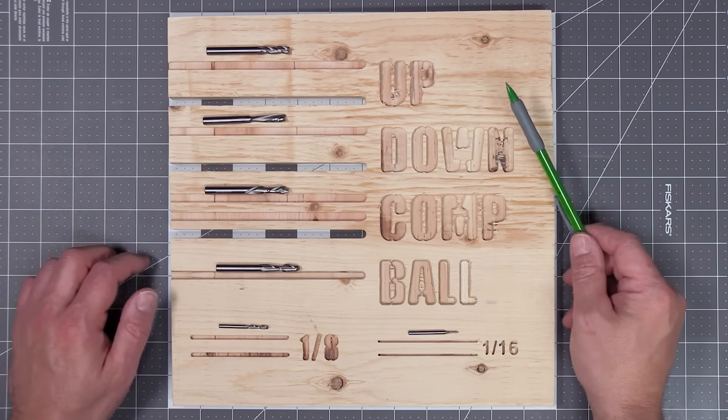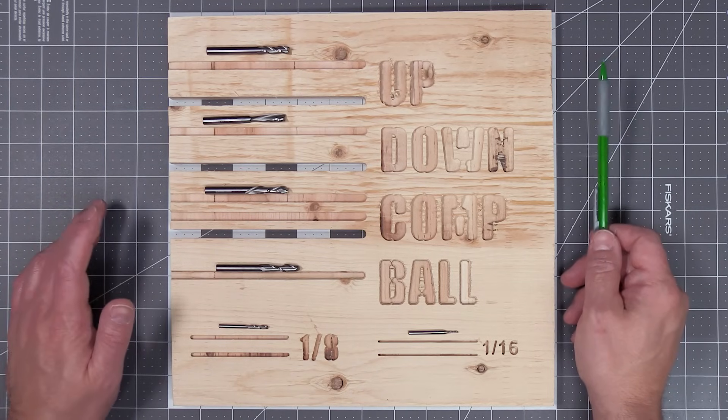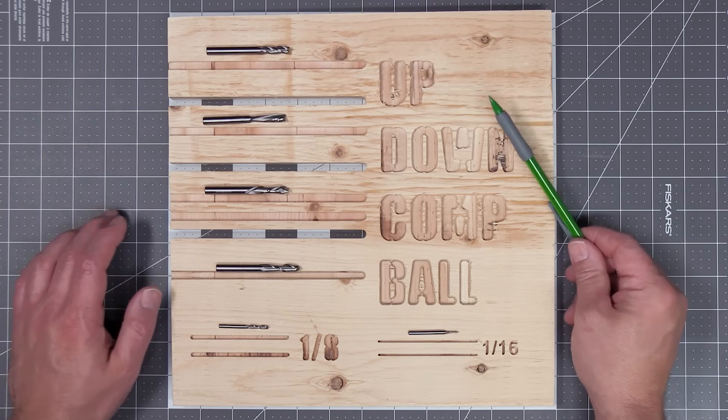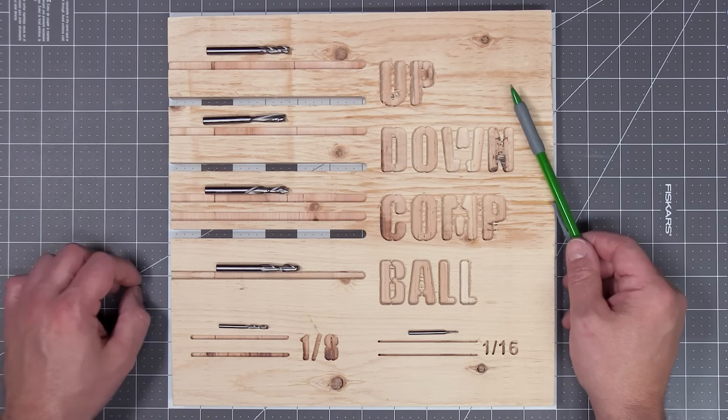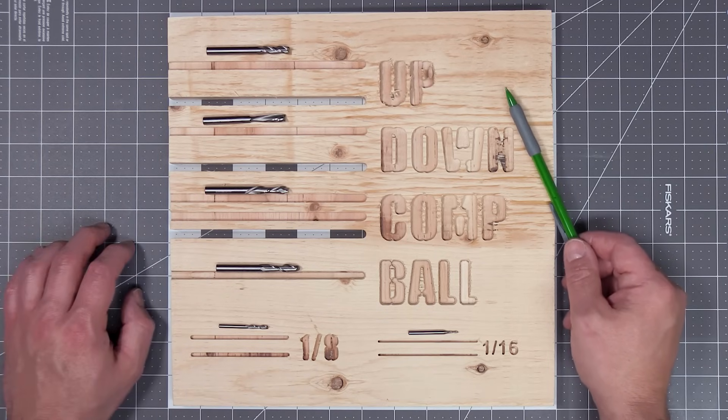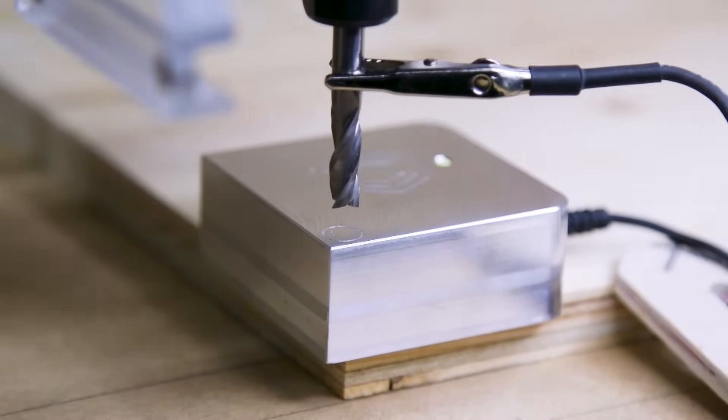Because of this upward cutting direction, the tear out from this bit happens at the top of your cut while leaving the bottom clean. Because of this, you want to make sure the good side of your project is facing downwards. This tear out on top also makes these up cut bits not the best choice for cutting pockets in your wood. Let's have a quick look at how this bit cuts.